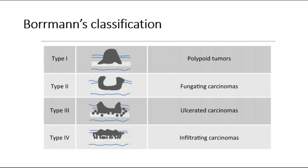There are a few classifications we can use to classify gastric cancer. The first one is Borrmann's classification, divided into four types: Type 1 polypoid tumour, Type 2 fungating tumour, Type 3 ulcerated tumour, and Type 4 infiltrating tumour.